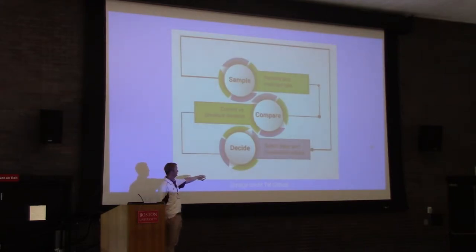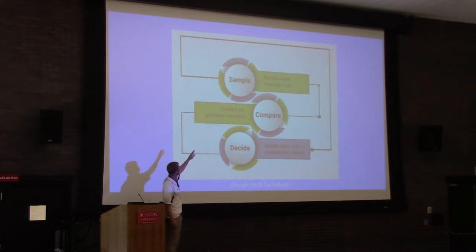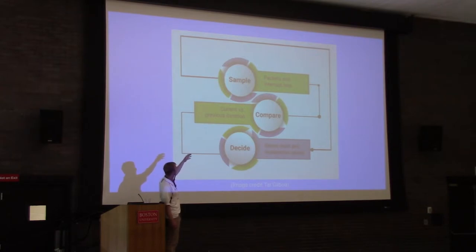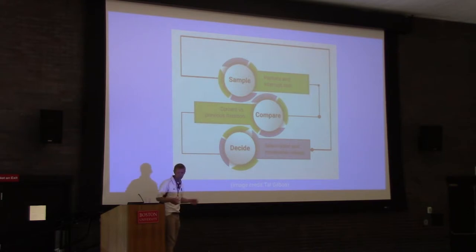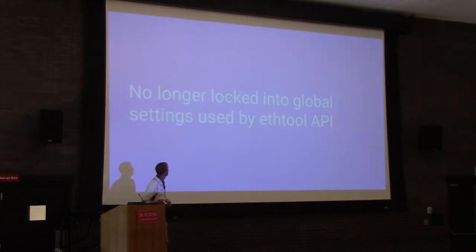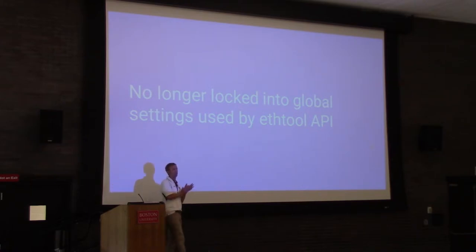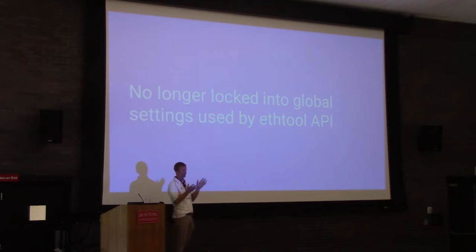This is basically how it works — slide credit to Tal Gaboa from Mellanox, who gave a talk on this. Take a sample, compare that sample to previous runs and previous iterations, then decide whether or not you want to make a change. When we dug into it, it seemed pretty good. One cool thing for kernel developers: this allowed us to escape the constraints of the global ethtool API used for configuring interrupt timers.